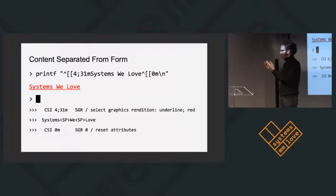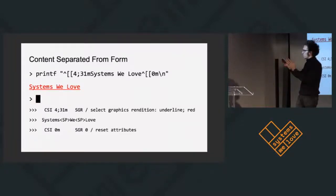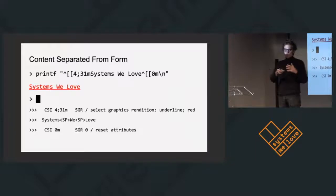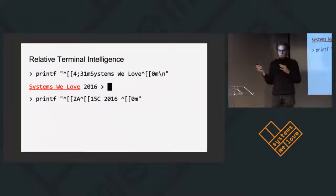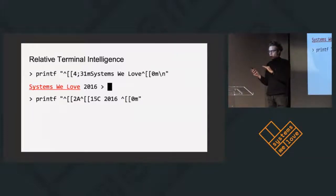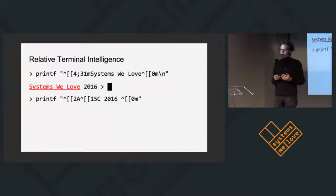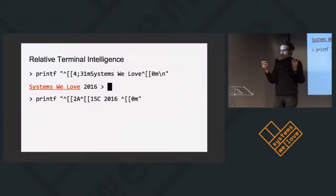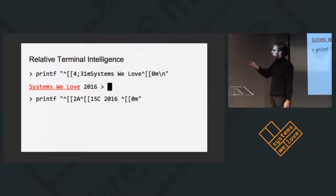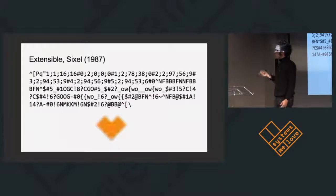It's very readable information — terse, and you have to remember these escape characters and control sequence introducers, but it's something you can just read and add right to a file and understand. It also has this relative intelligence. They called the DEC VT05 and later models 'intelligent terminals.' I don't think anyone in this room would consider them intelligent, but they did allow you to tell the terminal what to do, and it would be responsible for figuring out how to do that. In this case, I tell it to move up two lines, then move over 15 characters and type 2016.